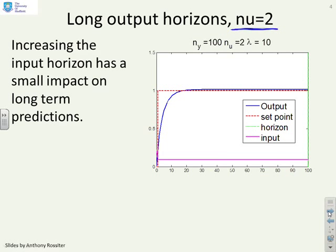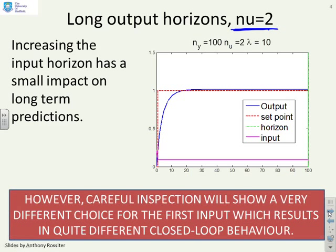If I was to go to nu equals 2 you'll see the response seems to look very very similar. And this is the prediction. But if you look very carefully you'll notice that the first value of the input is a bit more aggressive so you do actually get different closed loop behavior if nu goes to 2.